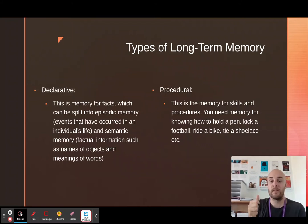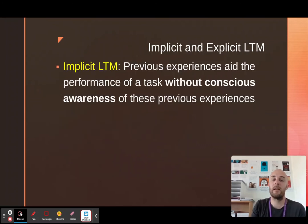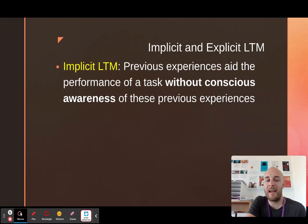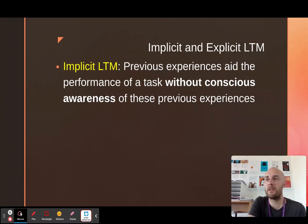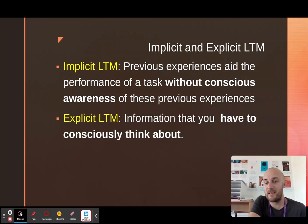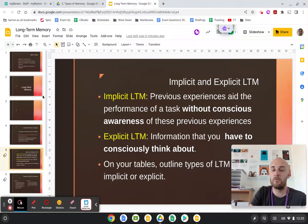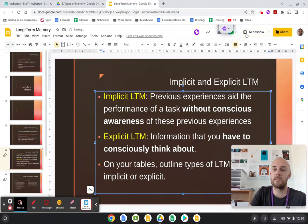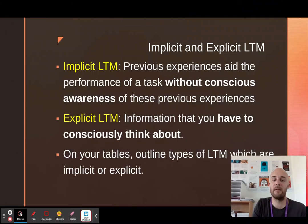So that's the first thing you need to know: semantic, episodic, and procedural memory. Now, those three memories can either be consciously or unconsciously recalled. If we're talking implicit memory, previous experiences aid the performance of a task without conscious awareness of those previous experiences — you do not have to bring that memory to mind. Procedural memory for skills is implicit; every time I tie my shoelace, I don't have to consciously think about how to do it. Episodic and semantic are both explicit — this is information you have to consciously think about.